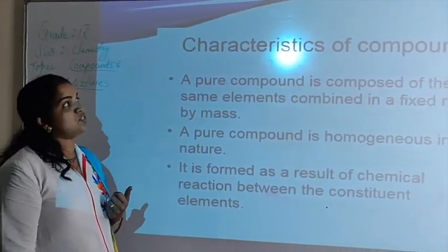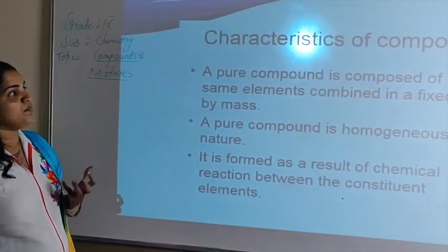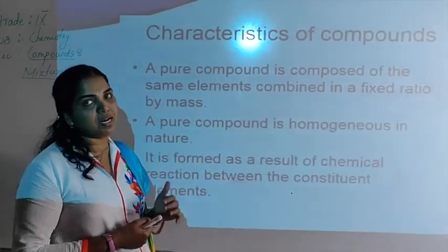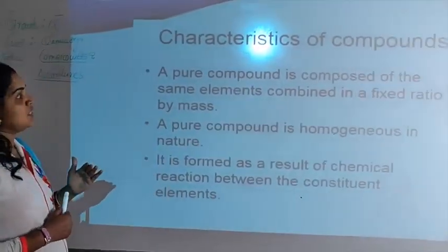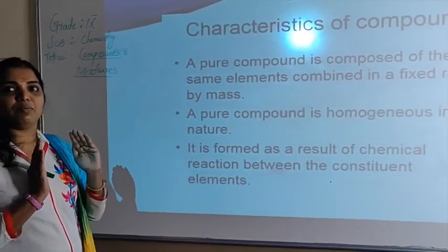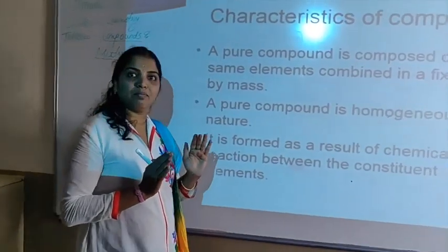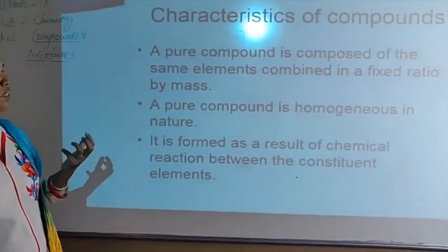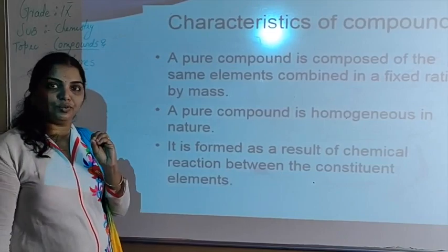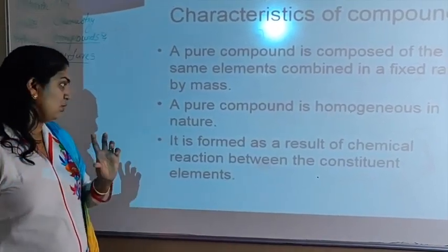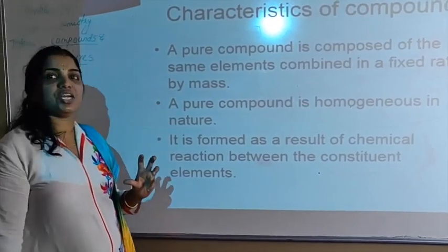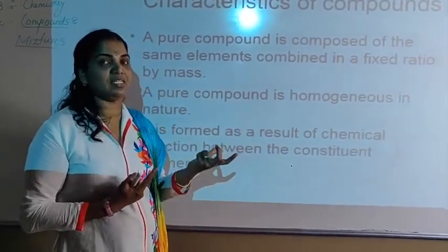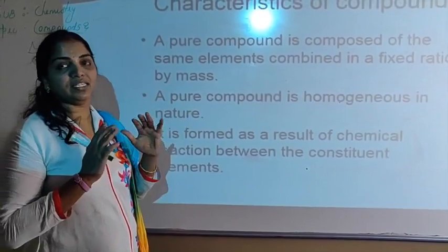Now let us discuss the characteristics of compounds. A pure compound is made up of two or more elements chemically combined in a fixed ratio by mass. They do not show the properties of their constituent particles; they have completely different properties. A pure compound is homogeneous in nature — uniformly distributed throughout — and is formed as a result of a chemical reaction between its constituent elements.